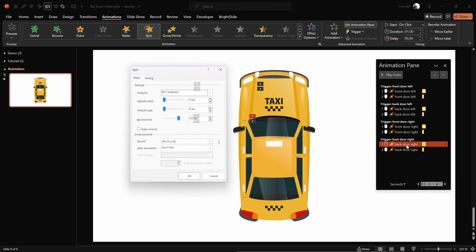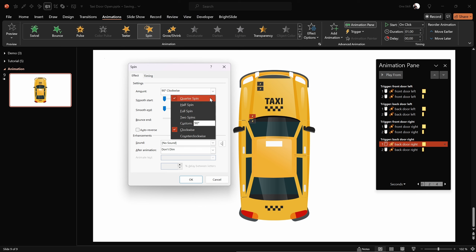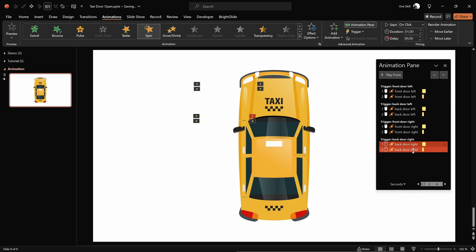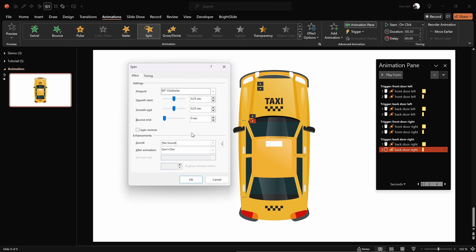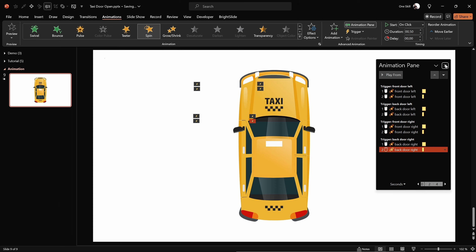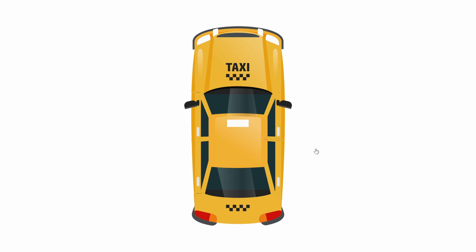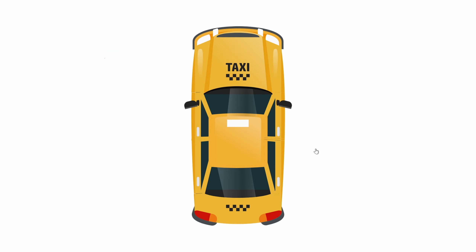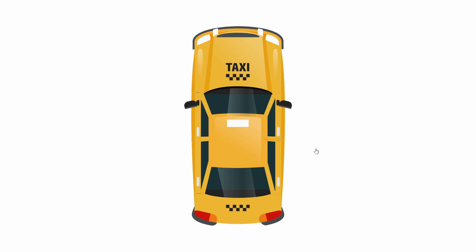For the right-side front door, choose Counterclockwise for opening and Clockwise for closing. Do the same for the second right-side door — change the spin directions for both spin animations. Now checking on full screen, all four doors are opening and closing the way they should.